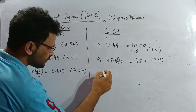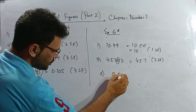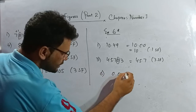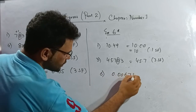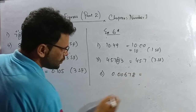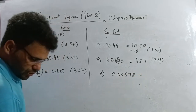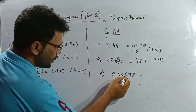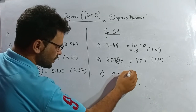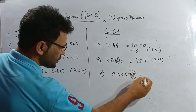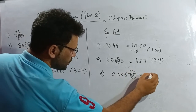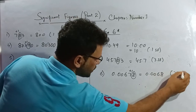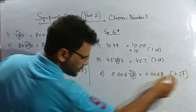Question number 6: 0.00678, write correct to two significant figures. One, two — check the third significant figure. Yes, it is greater than five, so I add one. The answer is 0.0068, two significant figures.